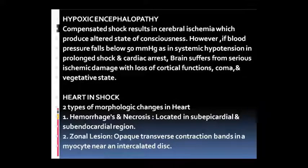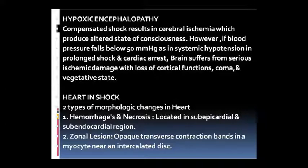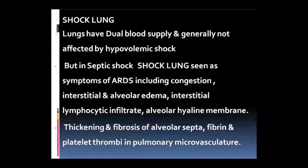Shock mein heart pe kya asar padega - morphological changes aane lag jaayenge, hemorrhage aur necrosis ho jaayega sub-epicardial aur sub-endocardial region ke andar. Yeh hemorrhage aur necrosis dikhai dega, zonal lesions dikhai denge jis mein opaque transverse contraction bands dikhai denge myocyte ke andar. Lung ke andar dual blood supply hoti hai, isliye generally to koi khaas asar nahi padta hypovolemic shock ka. Par agar septic shock hua ho lung ke andar to ARDS ke symptoms dikhai denge - jis mein congestion ho jaayega, interstitial alveolar edema ho jaayega, interstitial lymphocytic infiltrate ho jaayega, alveolar hyaline membrane dikhai degi, thickening aur fibrosis alveolar septa mein dikhai denge, fibrin aur platelet thrombi dikhai denge.